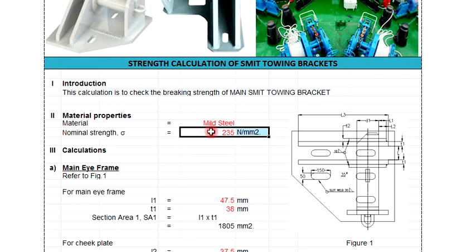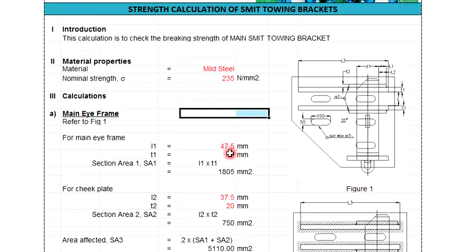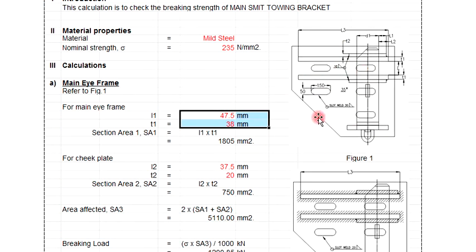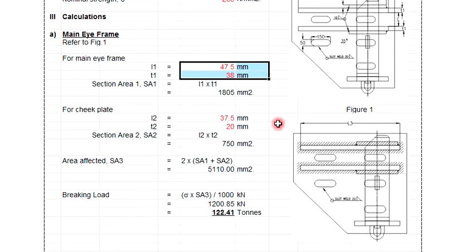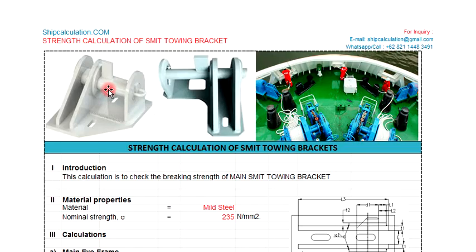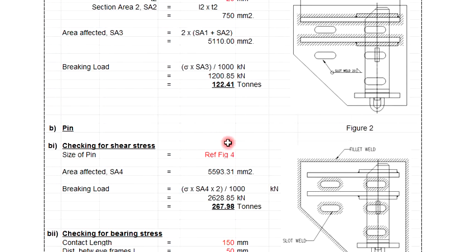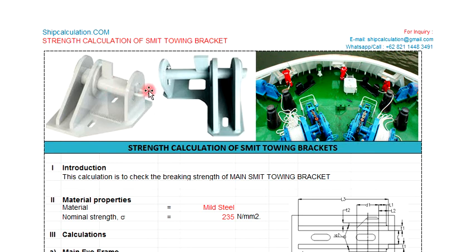This shows all the design sizes of the Smith bracket. You just input here based on this sketch. The main eye frame is this one here, and the cheek plate is this one — it looks like a doubler. This is the doubler from the base plate and the slot. You also need to check the pin — the pin is this one.